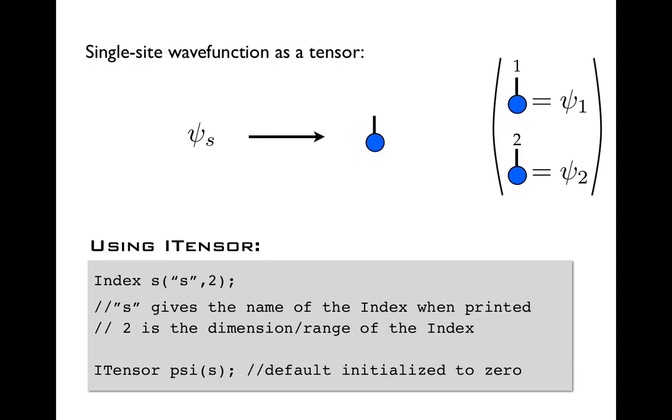And really this string is up to us, so s is just a choice here, and it's simply just the name of the index when we print it. So it's really something for humans to see to understand which indices an itensor has. So really we could have called this s1, or we could have called it t, doesn't matter.